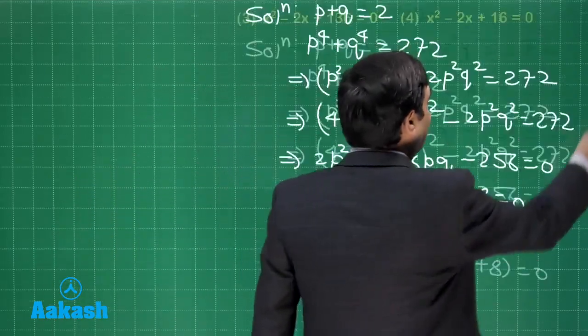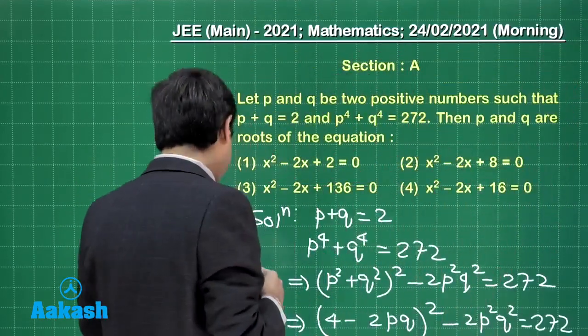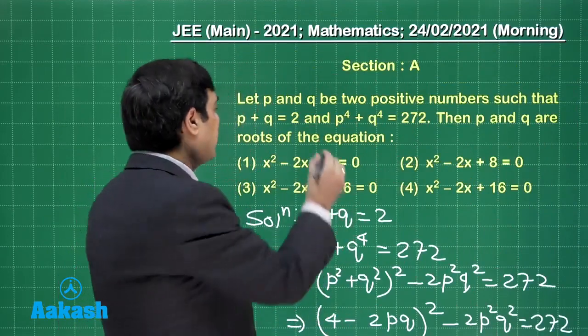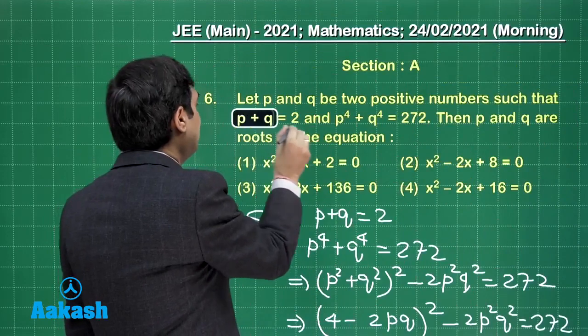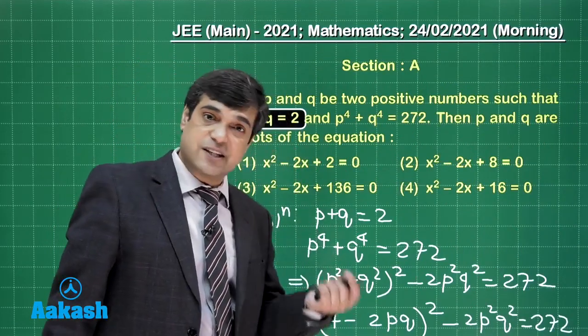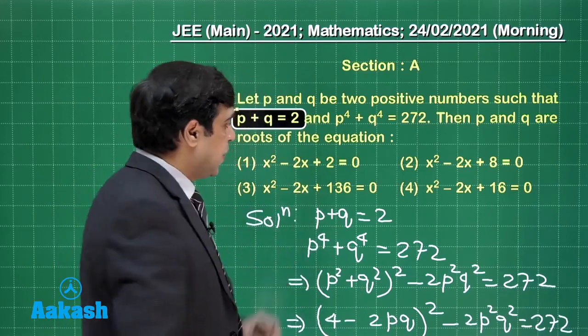Now looking back at the given question it says equation whose roots are p and q. Sum of the roots is equal to 2. Product of the roots I obtained either 16 or minus 8. So what is the correct equation?